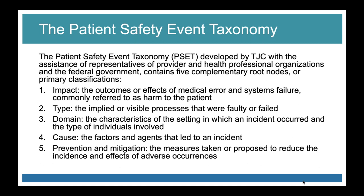The patient safety event taxonomy developed by the Joint Commission contains five complementary root nodes or primary classifications: impact — the outcomes or effects of medical errors and systems failure, commonly referred to as harm to the patient; type — the implied or visible processes that were faulty or failed; domain — the characteristics of the setting and type of individuals involved; cause — the factors and agents that led to an incident; and prevention and mitigation — measures taken or proposed to reduce the incident and its effects.